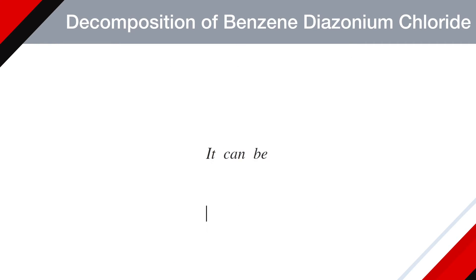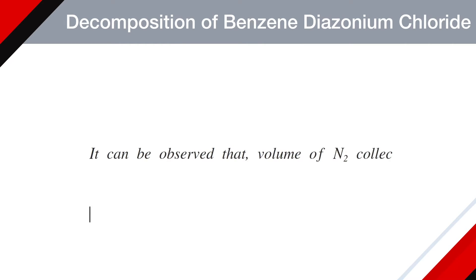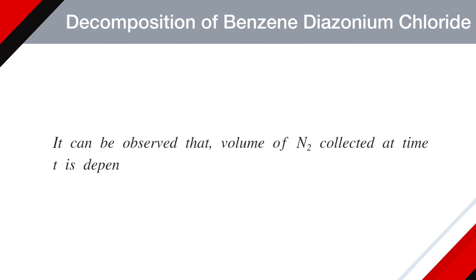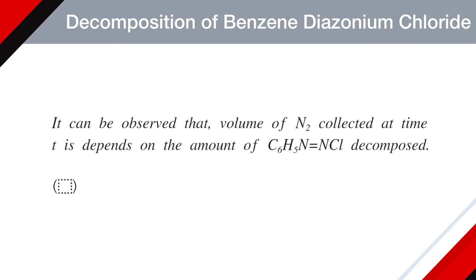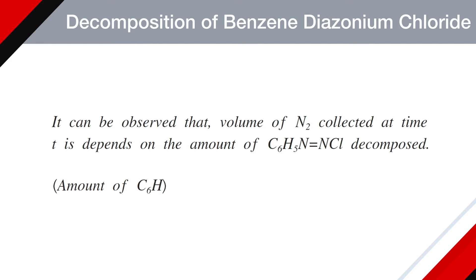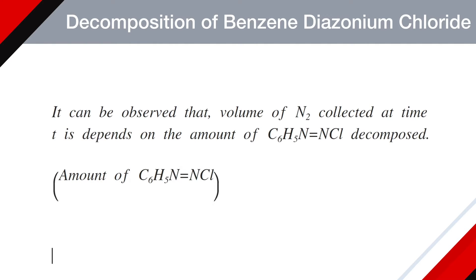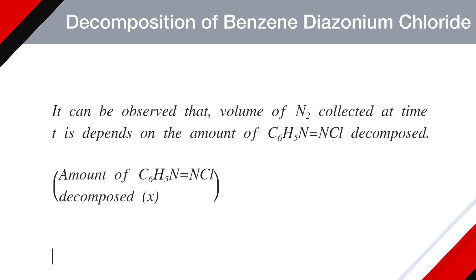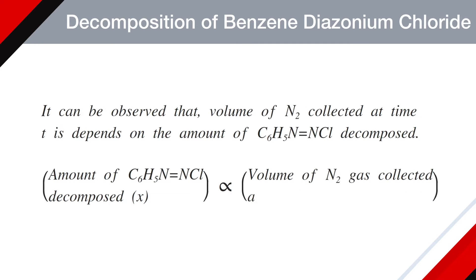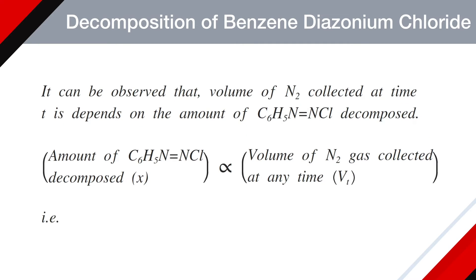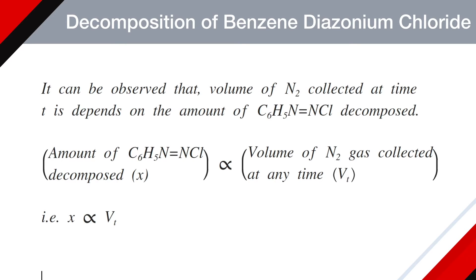It can be observed that the volume of nitrogen collected at any time t depends on the amount of benzene diazonium chloride decomposed. So we can say the amount of benzene diazonium chloride decomposed, that is x, is proportional to the volume of nitrogen gas collected at any time, that is Vt, or x ∝ Vt. This is equation number one.